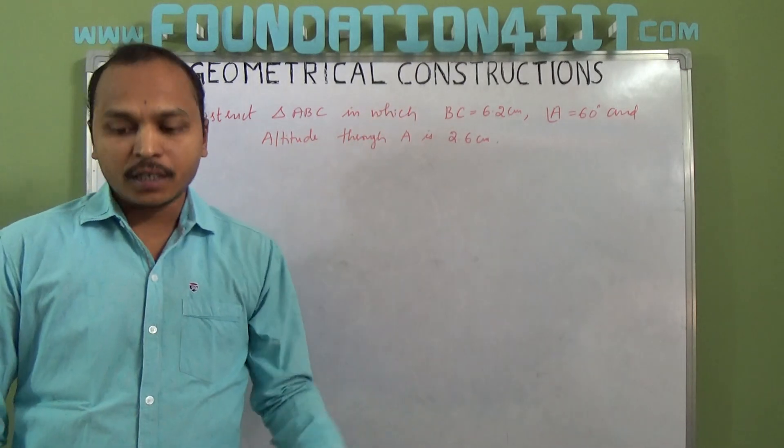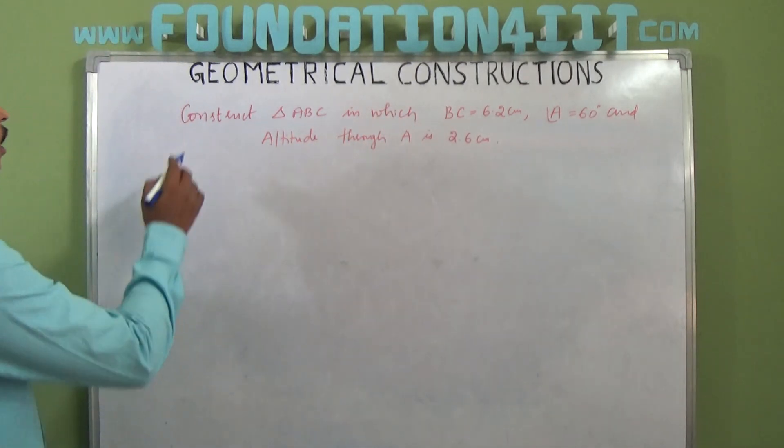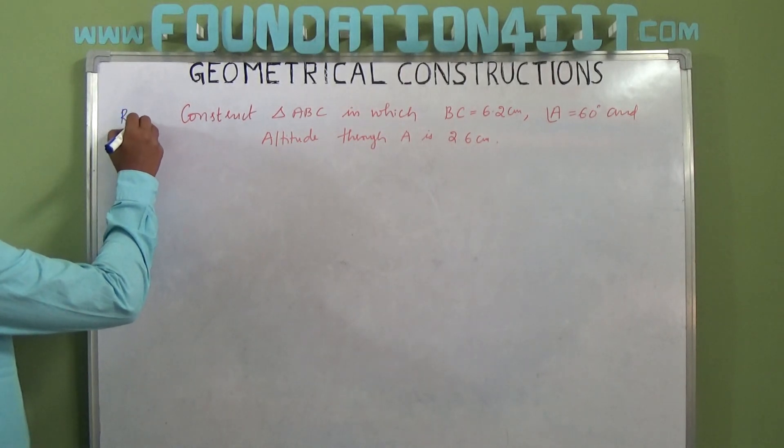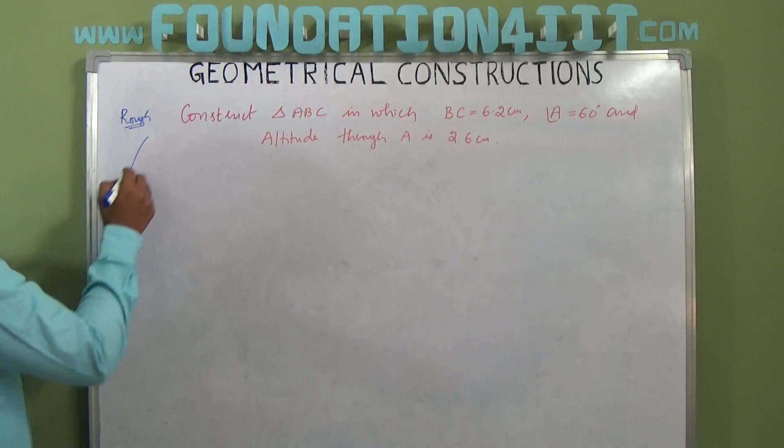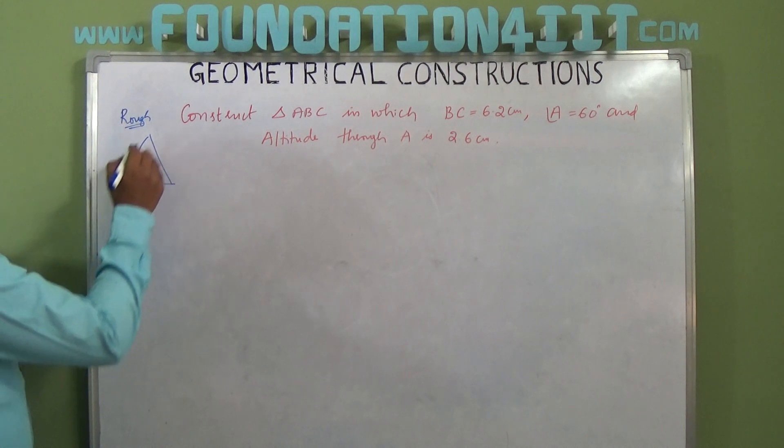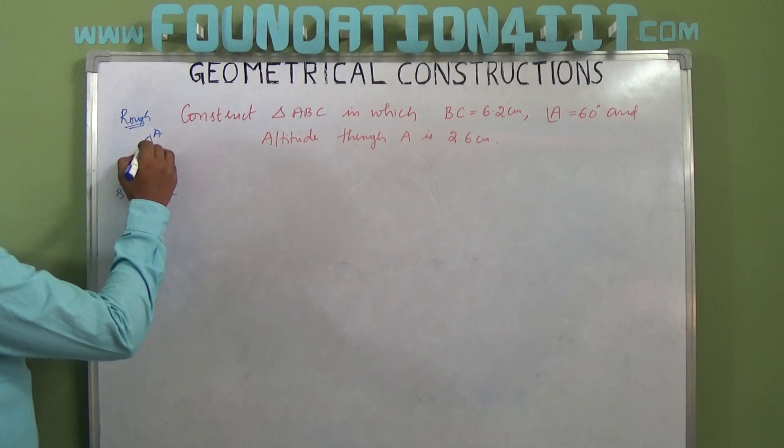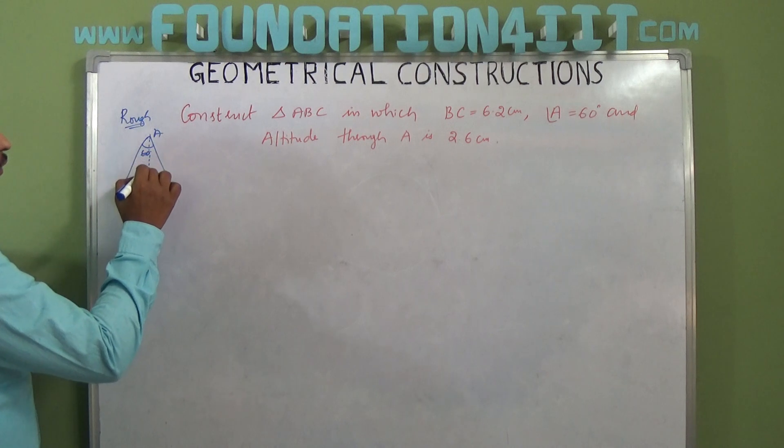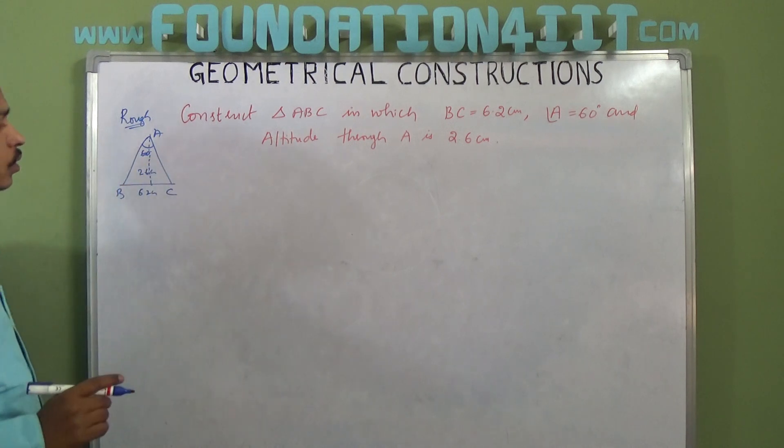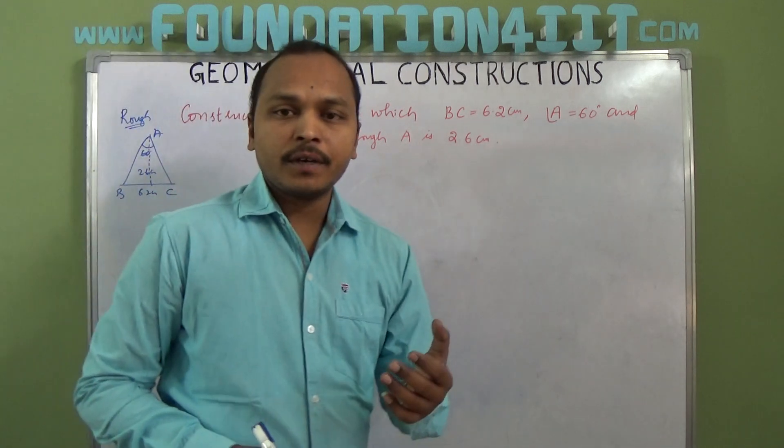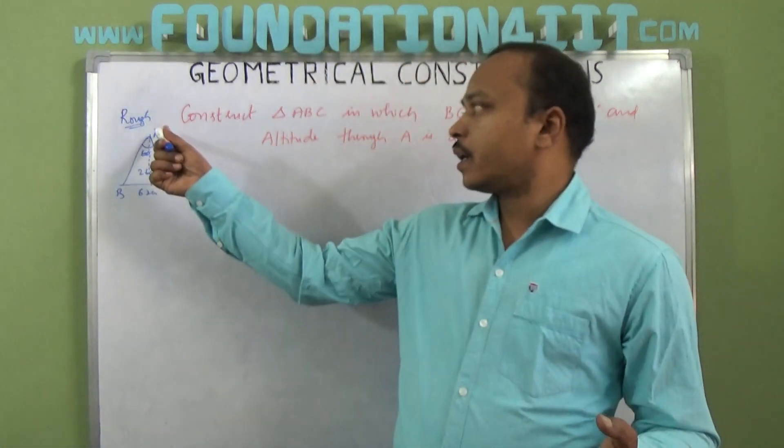If you observe the rough diagram, triangle ABC has BC equals 6.2 centimeters, angle A is 60 degrees, and altitude from A is 2.6 centimeters. So this is the given data: base is given, vertical angle, and altitude through A to base BC is 2.6 centimeters.